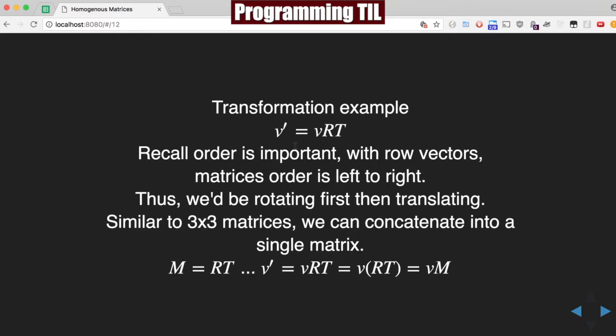So our transformation example, we're going to have V prime equals VRT. Recall order is important, and we're using row vectors, so matrix multiplication is happening from left to right. So we're going to rotate first, then translate, and we can concatenate into a single matrix, just like 3x3 matrices.